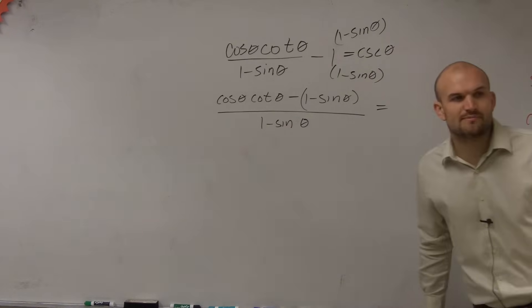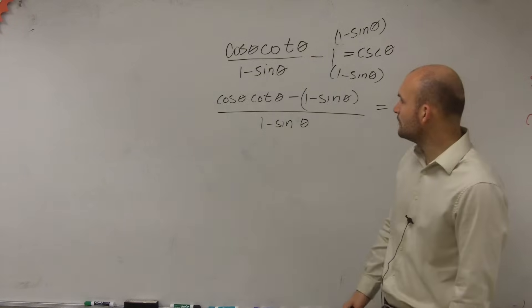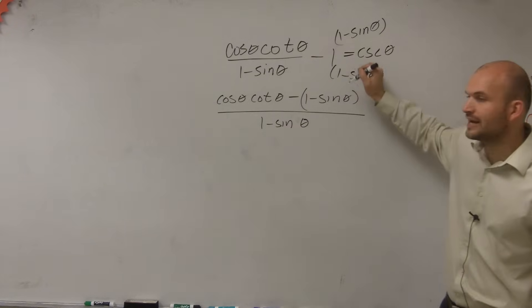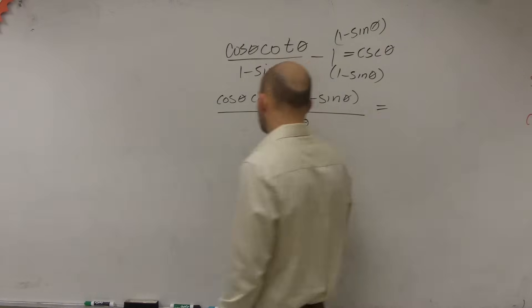Now the next thing is, let's go and see maybe if we can simplify our numerator a little bit before we get somewhere. So let's simplify the numerator. The one way we could do that is distribute the negative 1. And then let's maybe rewrite cotangent as cosine over sine.